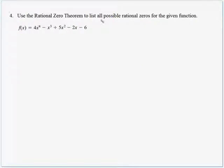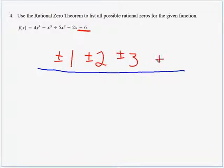All right, on to question 4. List all possible rational zeros. Well, in the numerator, we put the factors of the constant. Plus or minus 1, 2, 3, 6. Denominator are the factors of the leading coefficient, 4. Plus or minus 1, 2, 4.